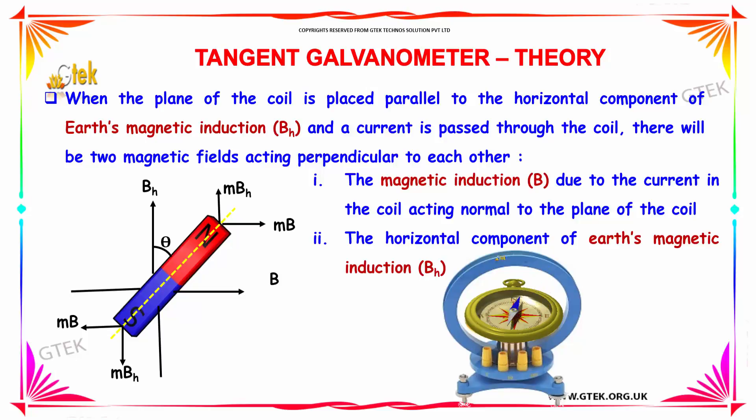When the plane of the coil is placed parallel to the horizontal component of Earth's magnetic induction and a current is passed through the coil, there will be two magnetic fields acting perpendicular to each other.